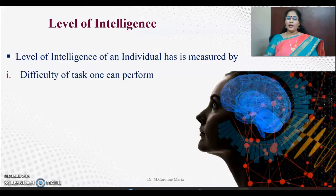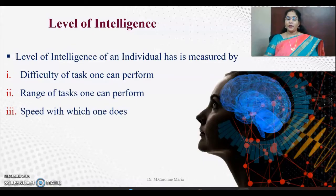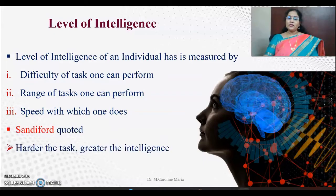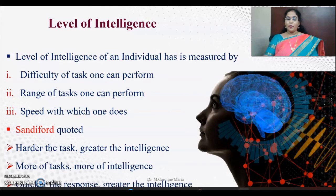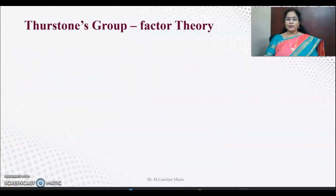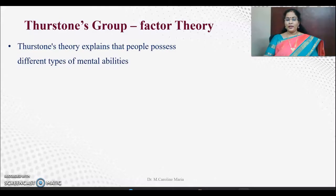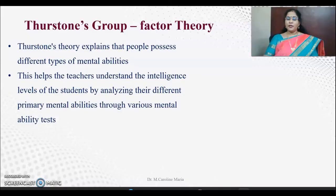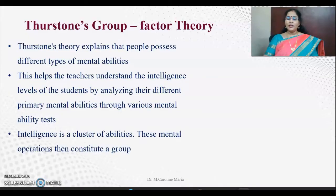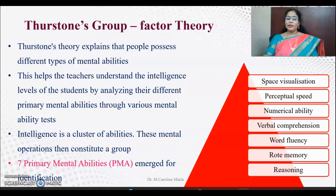The level of intelligence, according to Thorndike, is measured by the difficulty of the task one can perform, the range of tasks one can perform, and speed. The harder the task and the greater the number of tasks, the greater the intelligence; and the quicker the response, the greater the intelligence. Then Thurston came forward and said that a group of factors is involved in a person's intelligence. Thurston's theory explains that people possess different types of mental abilities, helping teachers understand students' intelligence levels by analyzing their different primary mental abilities. Intelligence is a cluster of abilities.